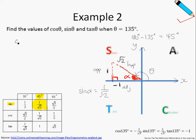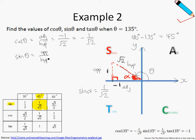Now let us find the trigonometric ratios of theta. Cosine of theta is adjacent over hypotenuse — the adjacent is negative 1 and the hypotenuse is root 2, so cosine of theta equals negative 1 over root 2. Sine of theta is opposite over hypotenuse — opposite is positive 1 and hypotenuse is root 2, so sine of theta equals 1 over root 2. Tangent of theta is opposite over adjacent — opposite is 1 and adjacent is negative 1, so tangent of theta equals negative 1.